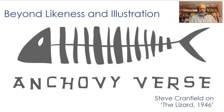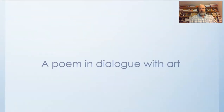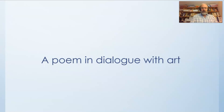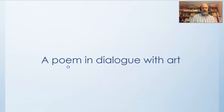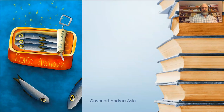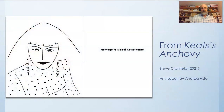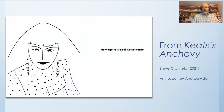I'm going to talk about this in relation to one of the poems in the book called 'The Lizard 1946,' and I suppose I'm going to attempt to show how a poem enters into a kind of dialogue with visual art. The poems are in a book called Keats's Anchovy, so let's open the tin and see what's inside. One of the sections of the book is called 'Homage to Isabel Rawsthorne.'